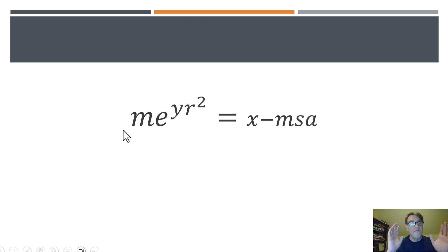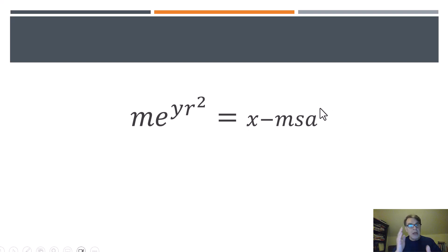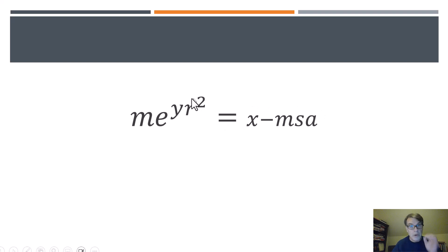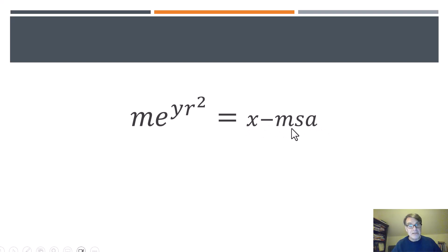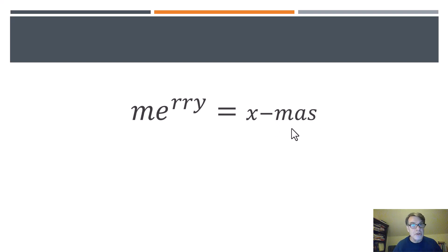Now we're very close to a breakthrough. We can redistribute: m times s times a is the same as m times a times s. And r squared is basically r times r, and we can rearrange the order — it doesn't matter, a times b equals b times a. That's the commutative property, that we can change the order in which things are multiplied. So m e to the y r squared is the same as m e to the r r y, and this equals x minus m a s. And there we have it — we have the solution to this problem.